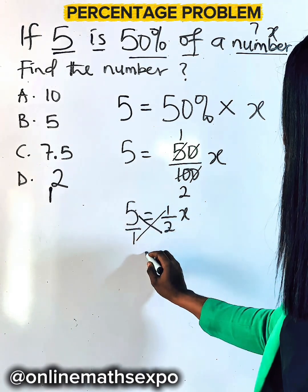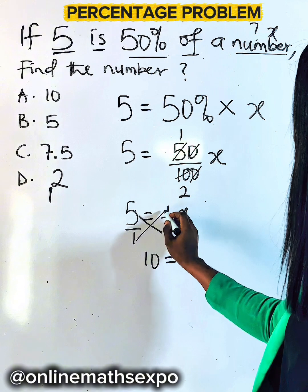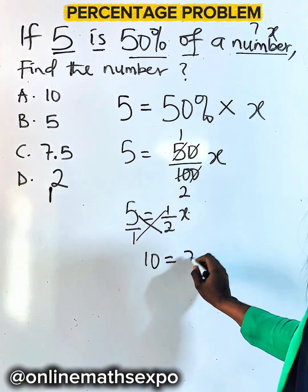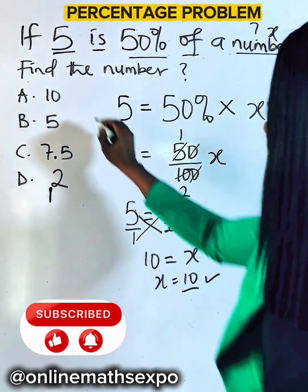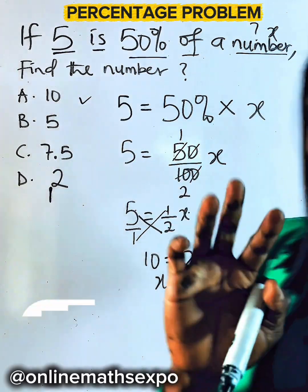So we multiply 5 to give us 10. And 1 multiply 1 is 1 times x is x. So our x is equal to 10. And that is option A. Bye-bye.